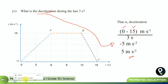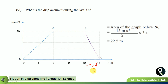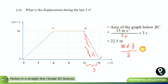For the displacement during the last three seconds, we find the area of the triangle: the height is 15 and the base is 3. Since it is a triangle, we divide by two: 15 multiplied by 3 divided by 2 equals 45 divided by 2, giving a displacement of 22.5 meters.